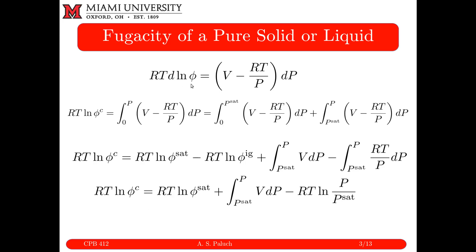Here's the expression from the last sheet. To calculate log FC for a compressed phase, I integrate from P = 0 to P. I integrate from P = 0 because at constant T, all fluids approach ideal gas behavior, and in the ideal gas limit F equals one. So I integrate from zero to P of (V − RT/P) dP. We then break this integral into two parts: an integral from zero to PSAT and a second integral from PSAT to P.